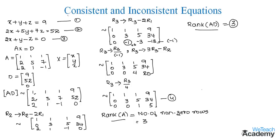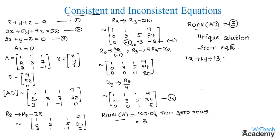Since rank(A) = rank([A|D]) = 3, the system is consistent and therefore has a unique solution. From equation 4, we write the equations: x + y + z = 9, 3y + 5z = 34, and z = 5.